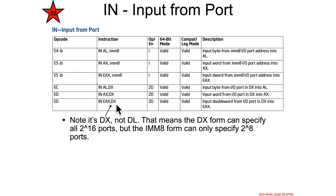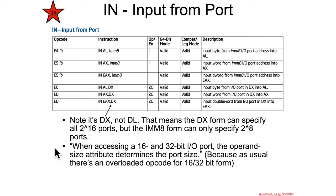Note that DX is a 16-bit value — the lowest 16 bits of EDX or RDX — which means the DX form is the only form that can access all 2 to the 16 ports. An immediate 8-bit port number will not allow you to access the upper port range. The manual also says that when accessing 16- or 32-bit port I/O, the operand size attribute determines the port size, and that comes from segmentation — whether you have a 16-bit or 32-bit segment.